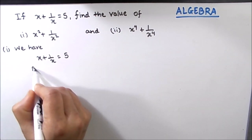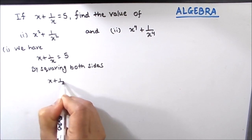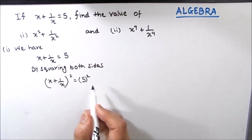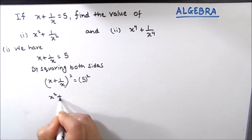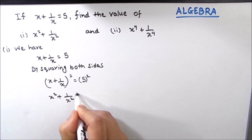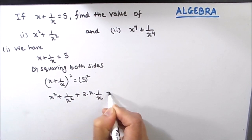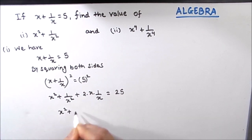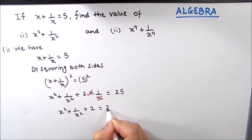Now by squaring both sides, we have x plus 1 by x whole square is equal to 5 squared. Using the identity a plus b whole square, we have x squared plus 1 by x squared plus 2 times x times 1 by x is equal to 25. This simplifies as the x terms cancel, giving x squared plus 1 by x squared plus 2 is equal to 25.